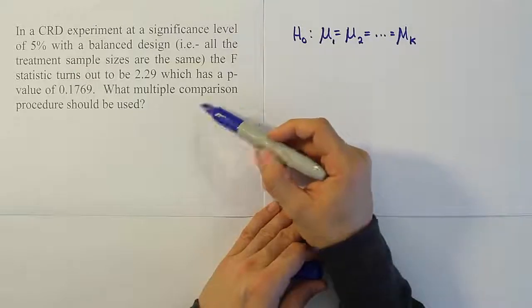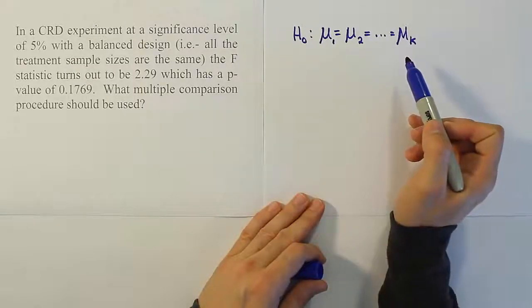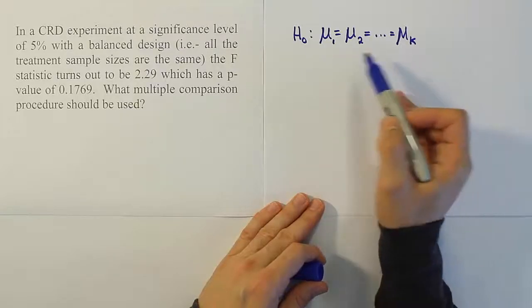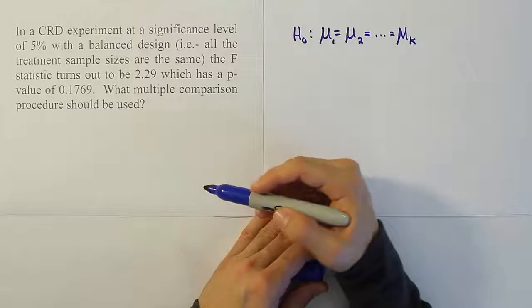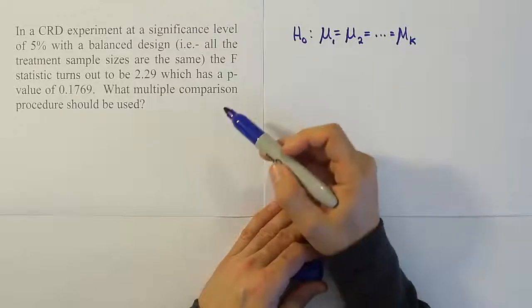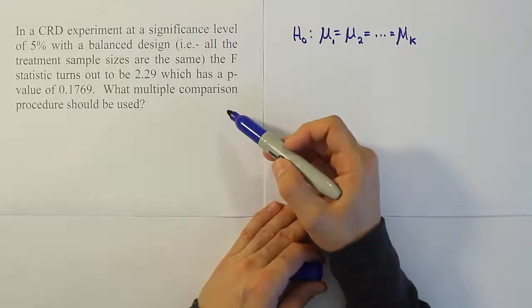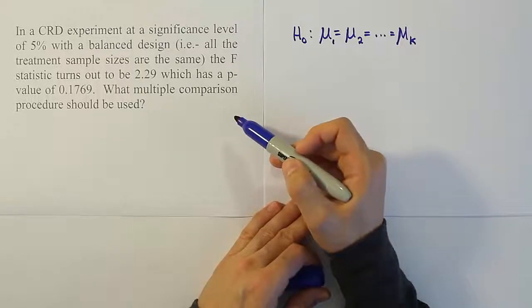That's what multiple comparison procedures do — they try to see which means are different from one another significantly. But if we're saying that H₀ is true, we're basically saying they're all the same, so there's no need to do a multiple comparison procedure. The first thing to check is: did we reject the null hypothesis? Because if we didn't, we should not be using the multiple comparison procedure.